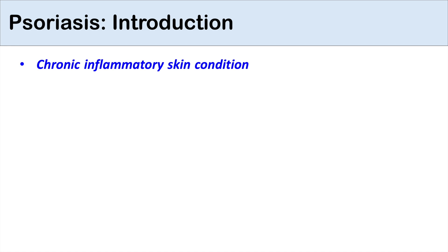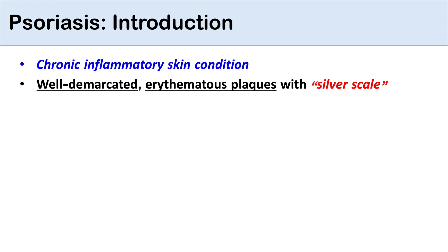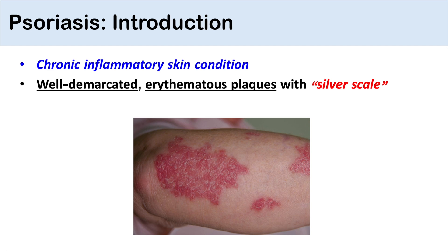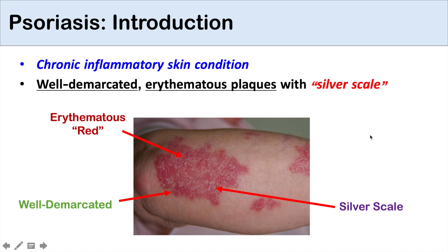Psoriasis is a chronic inflammatory skin condition with well-demarcated erythematous plaques that have a characteristic silver scale. If we take a closer view of a psoriasis plaque, it is well-demarcated, meaning it has a clear border going from red to normal skin tone. It's erythematous, it has a silver scale with scale-like portions, and it is a plaque — a raised skin lesion greater than one centimeter.